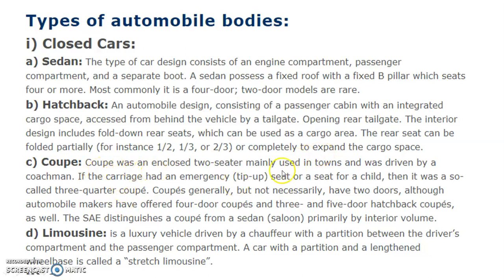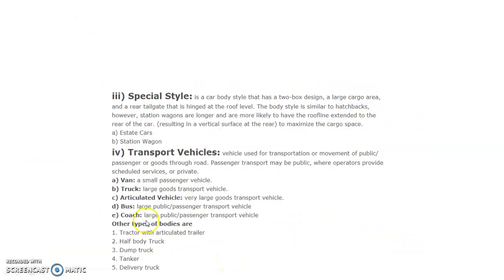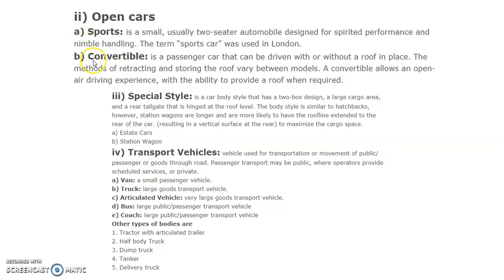Coupe: A coupe was an enclosed two-seater mainly used in towns and was driven by a coachman. If the carriage had an emergency seat or seat for a child, it was called a three-quarter coupe. Coupes generally have two doors, although automobile makers have offered four-door coupes and three and four-door hatchback coupes as well. Limousine is a luxury vehicle driven by a chauffeur with a partition between the driver's compartment and passenger compartment. A car with a partition and lengthened wheelbase is called a stretch limousine.